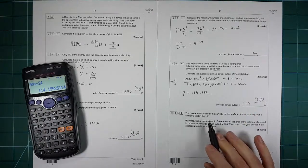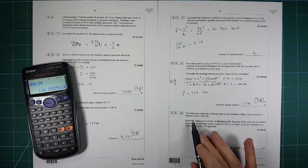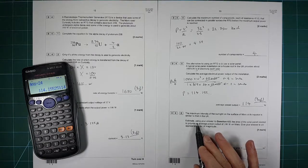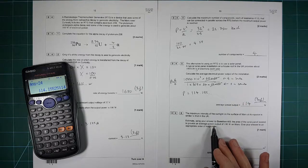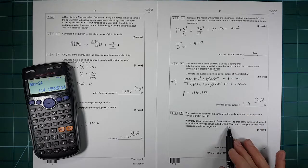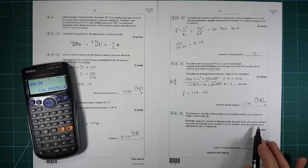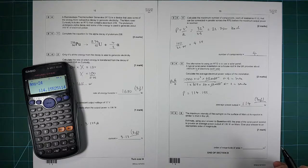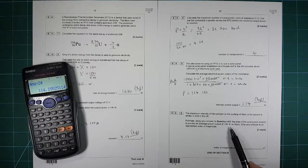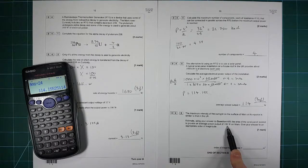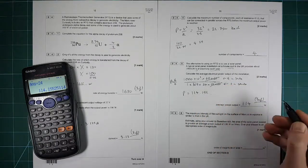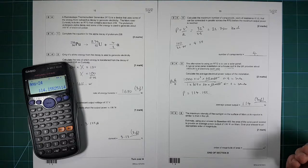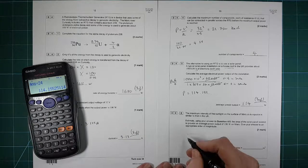The maximum intensity of sunlight at the surface of Mars at its equator is similar to that in the UK. Estimate, using your answer to here, the area of a solar panel needed to provide an average power output of 100 watts on Mars. Give your answer to appropriate order of magnitude. Right, so we just need to make an estimate here. We need to get in the correct ballpark. So we've got 100 watts that we need. A typical solar panel on a house roof provides about 100 watts, so it's the same. So we just need to think about how big a house is.